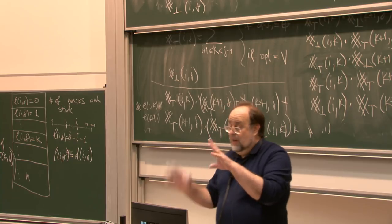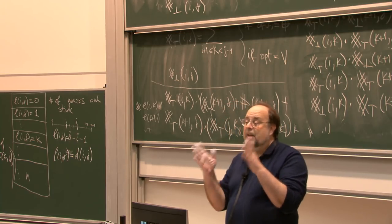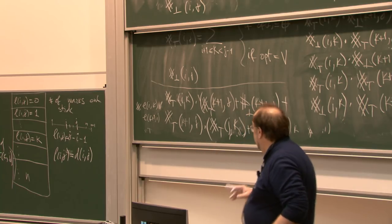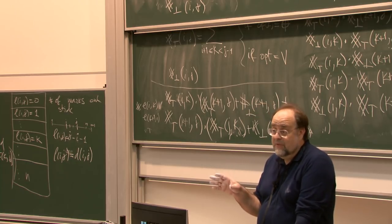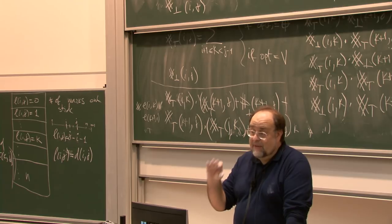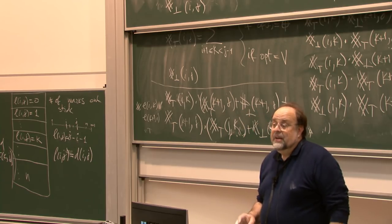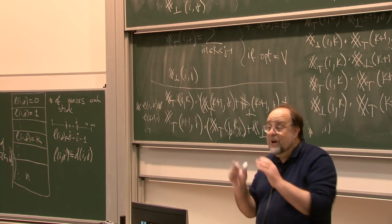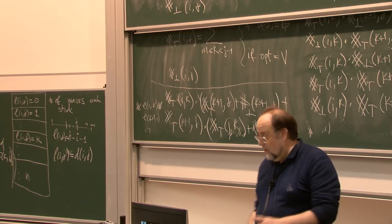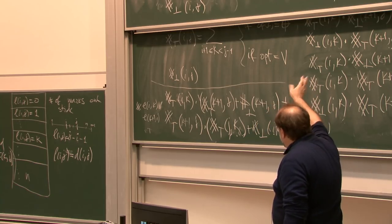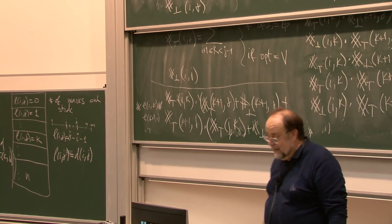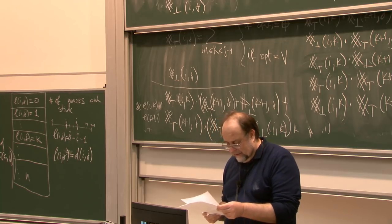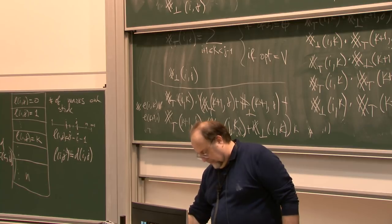This is an example of where for dynamic programming you have to decide what the sub-problems are, and often you have to generalize the problem. Here we are only interested in how many ways to make the expression true, but in order to have a convenient recursion it turns out the sub-problem should be the pair: how many ways to make the expression true AND how many ways to make it false.